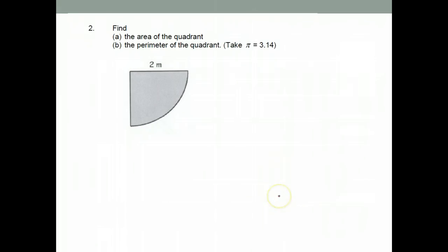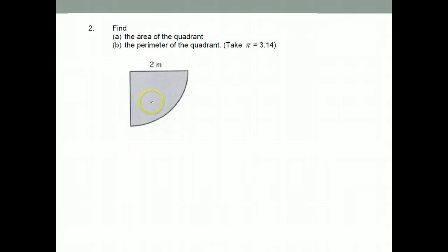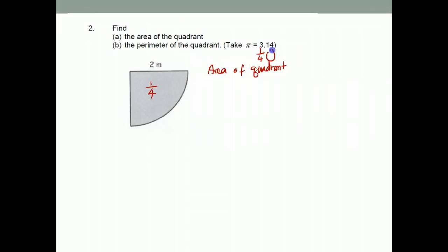Question 2. Find the area of the quadrant. This is a quadrant. A quadrant is made up of one quarter of a circle. So we put one quarter here. Therefore, area of quadrant or one quarter circle would be one quarter times pi, which is 22 over 7.